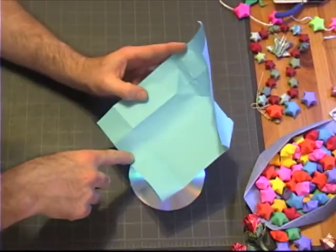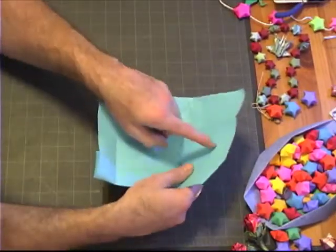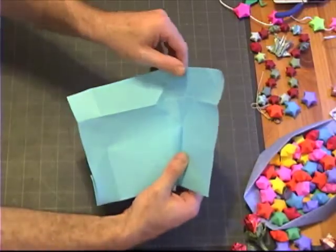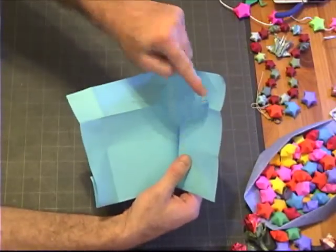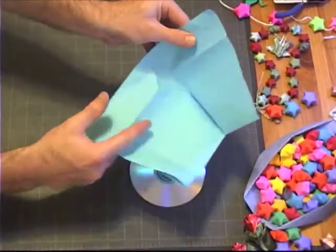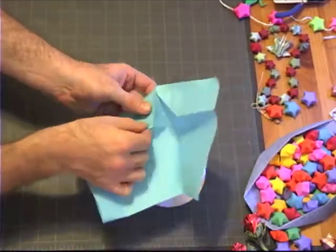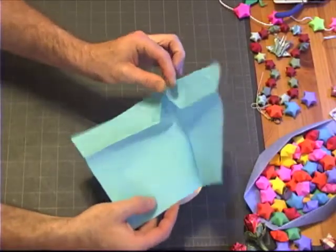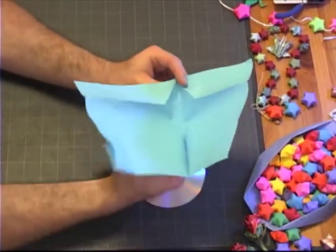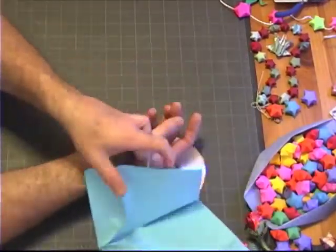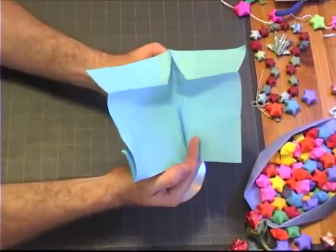This folded in towards us, and that means we want this folded back like this, and that creased like that. You can see how that diamond shape comes together.